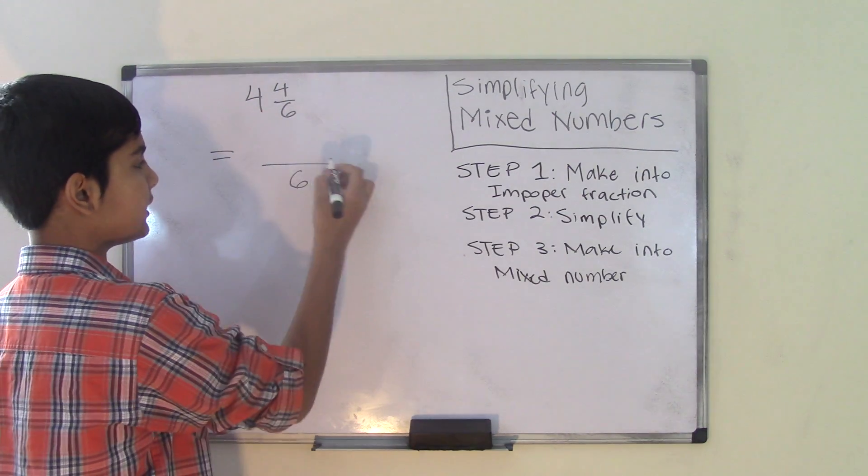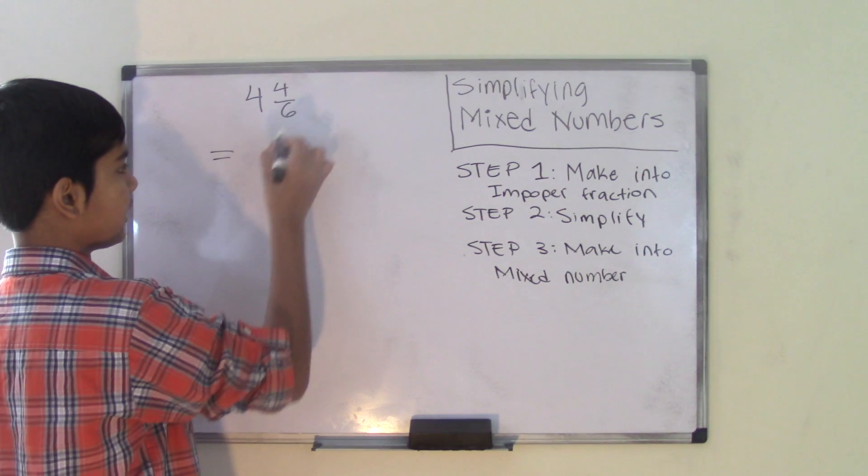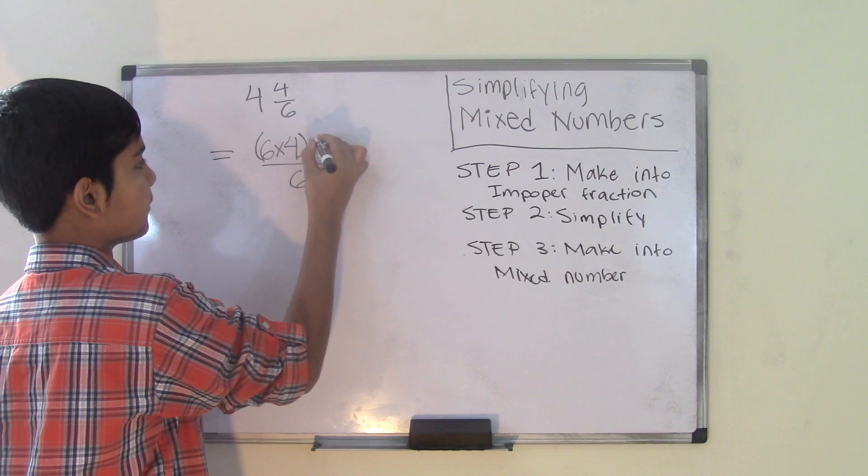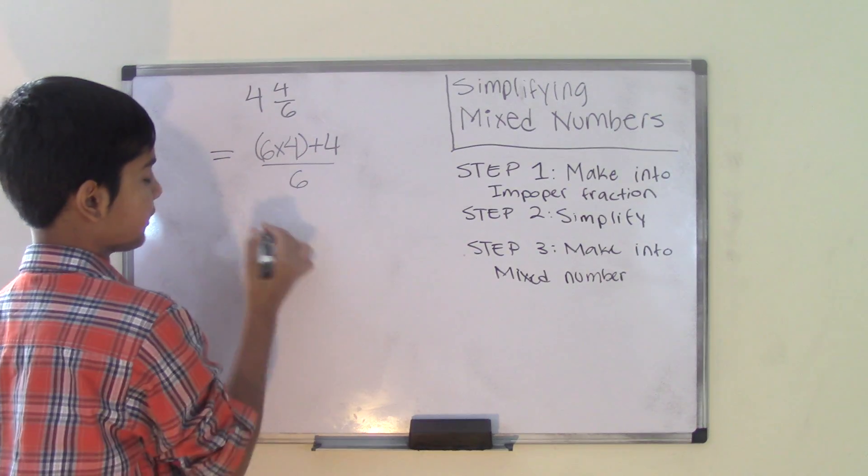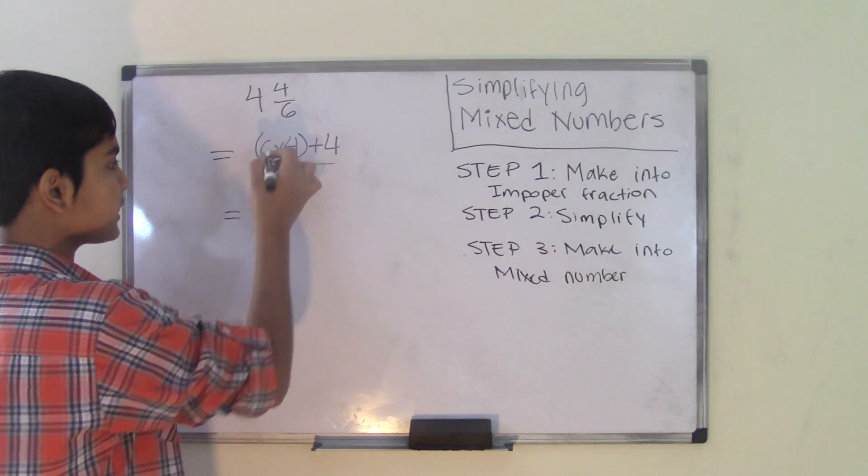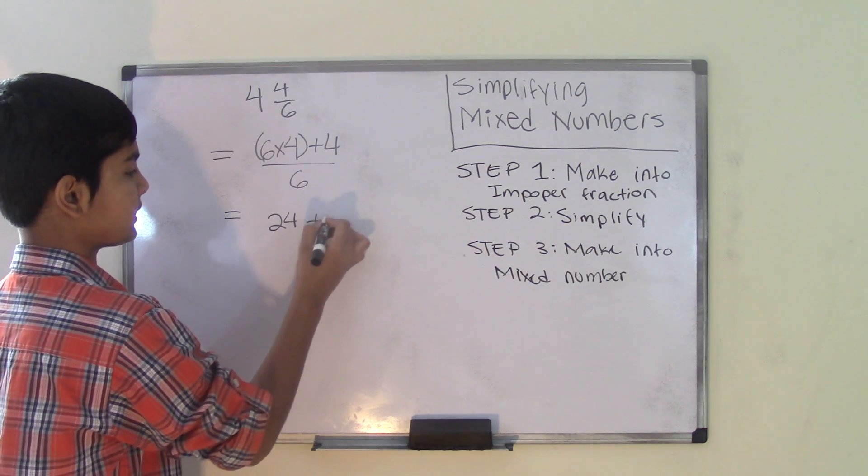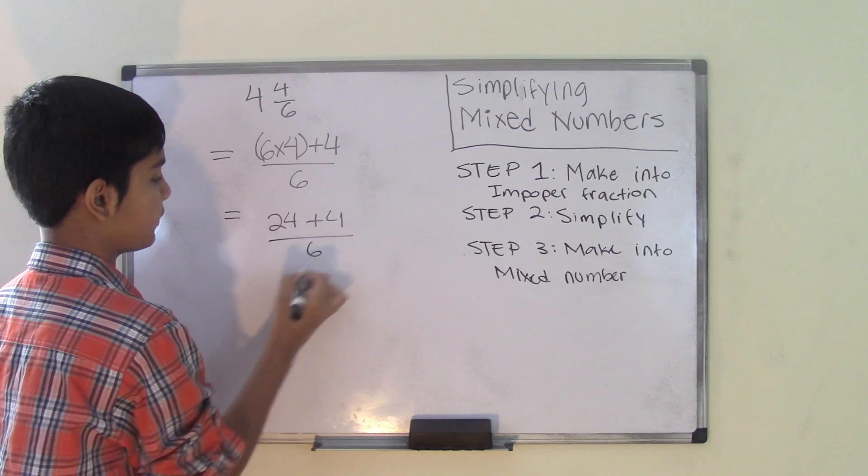And what you need to do is you need to multiply the denominator, which is number 6, by the whole number first. And then you have to add the number 4, which is the numerator, to the product. So 6 times 4 is 24, plus that 4, so over 6.